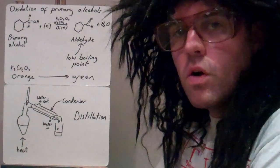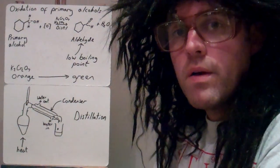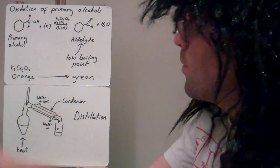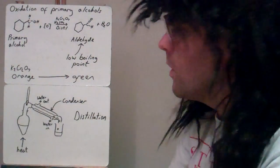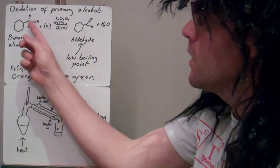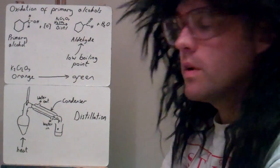Hi, in this video we're going to look at the oxidation of primary alcohols. So here we've got a primary alcohol. We can tell it's a primary alcohol because the OH is attached to a carbon that's only attached to one other carbon.